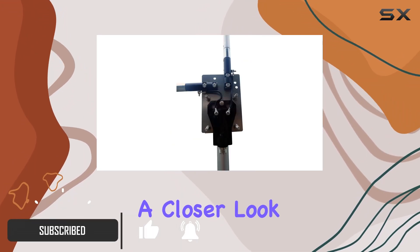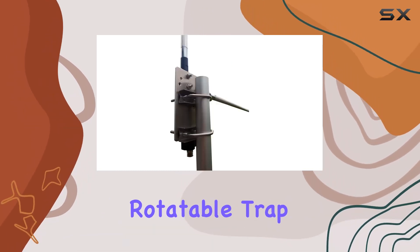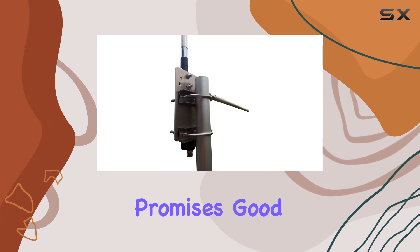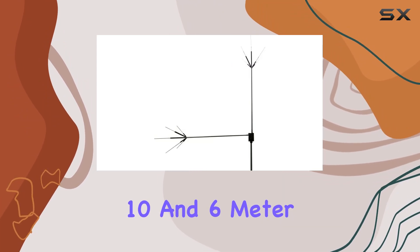Today, I'm taking a closer look at the HFV5 Diamond HF Dipole Antenna, a shortened, rotatable trap dipole that promises good coverage on the 40, 20, 15, 10, and 6-meter bands.